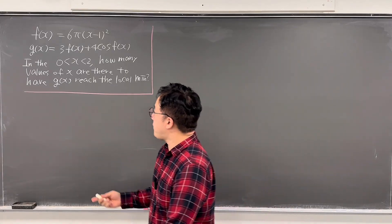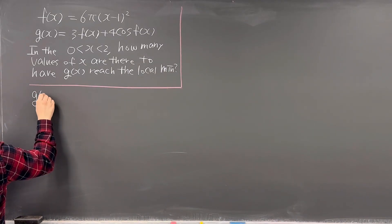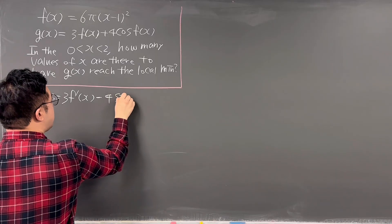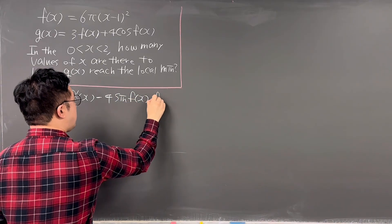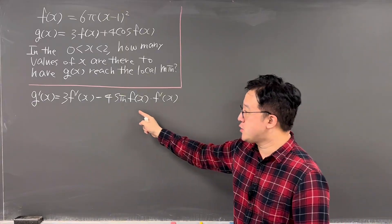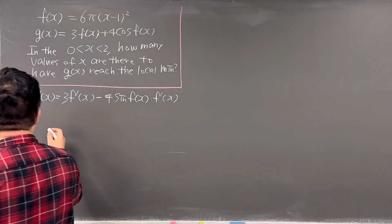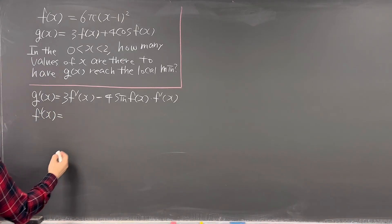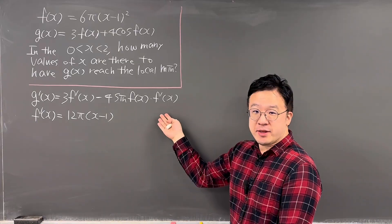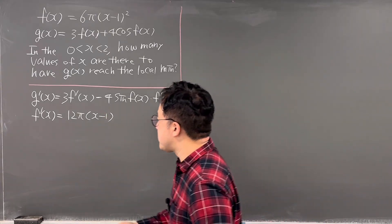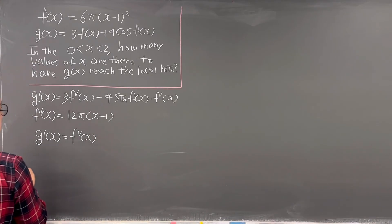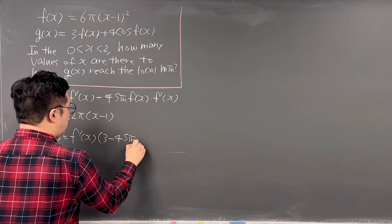Since we're talking about local min, let's take the derivative of g(x). So g′(x) is 3·f′(x) minus 4·sin(f(x))·f′(x), using the chain rule. We can see f′(x) appears in both terms of g′(x), so we factor it out: g′(x) = f′(x)·(3 − 4·sin(f(x))).